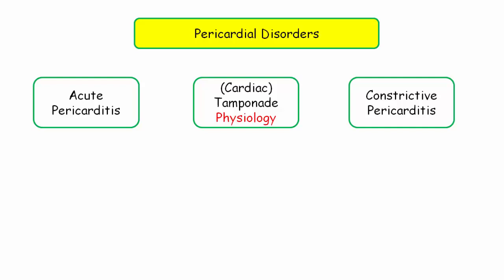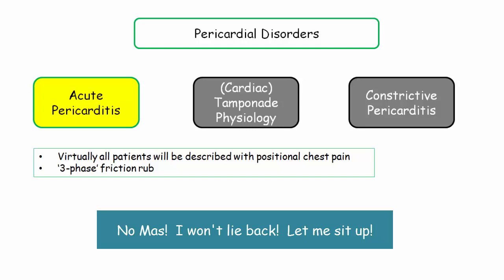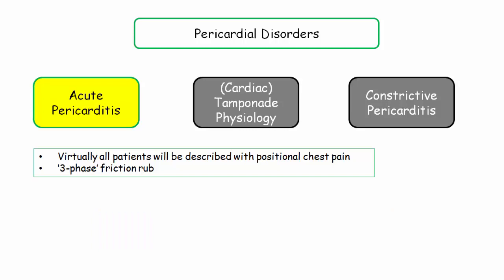As noted, virtually all patients will be described with positional chest pain. It won't just be a description of chest pain — they will likely specify that the patient will not want to lie down, and more specifically, they will want to sit up or are more comfortable sitting upright. In addition, most of the vignettes will describe a friction rub. We'll cover the rub in more detail shortly, but don't be confused if they use the description of a three-phase rub or a scratchy heart sound. It's just their way of being asinine.